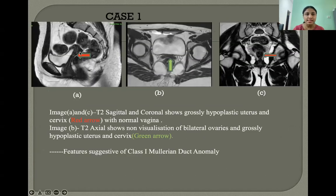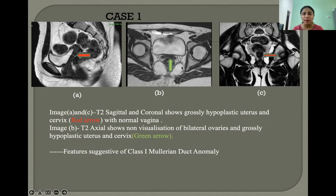Case 1: Image A is T2 sagittal and image C is T2 coronal, showing a grossly hypoplastic uterus and cervix with normal vagina. Image B is T2 axial, which shows non-visualization of bilateral ovaries with hypoplastic uterus and cervix. These features are suggestive of class 1 Mullerian duct anomaly.